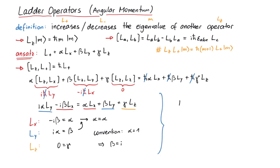The result is now that l plus is equal to l x plus i times l y. With a similar calculation, you can get the result for l minus, which is l x minus i times l y. And that's pretty much it for this video. Thanks for watching.